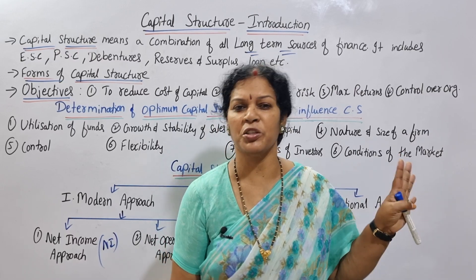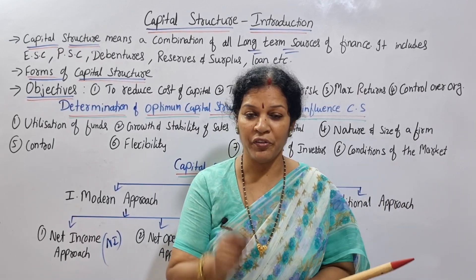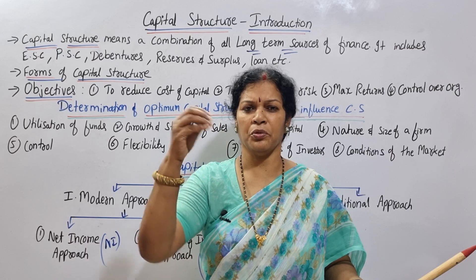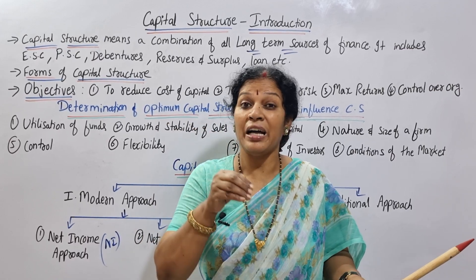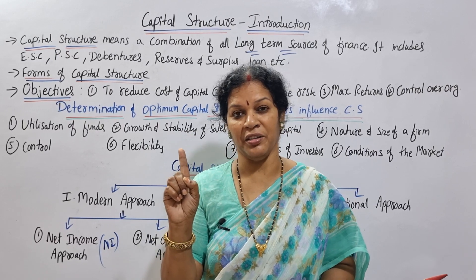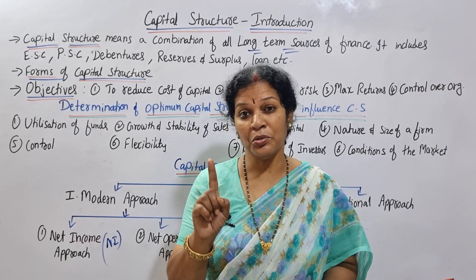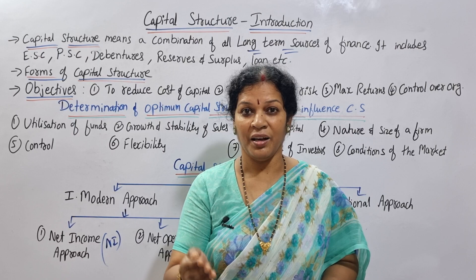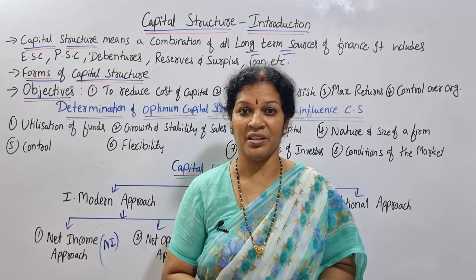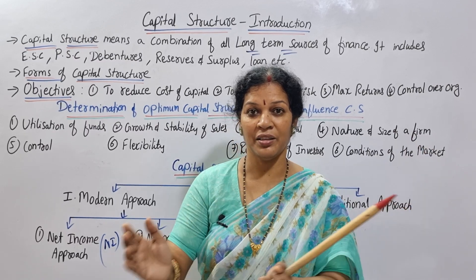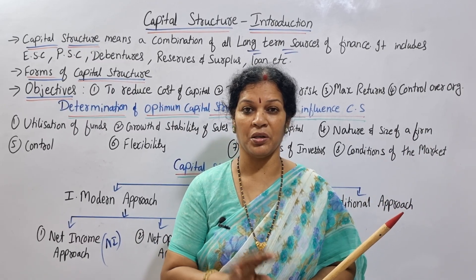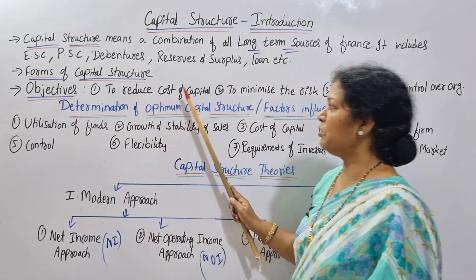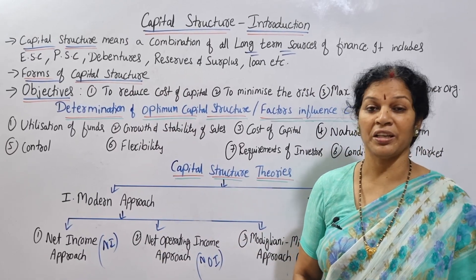The main objective of capital structure is to ensure that the funds raised are properly utilized. Whether through preference shares, debentures, or other instruments, the goal is proper utilization of capital. Another key objective is to lower the cost of capital — the issue of capital should minimize the overall cost of capital.